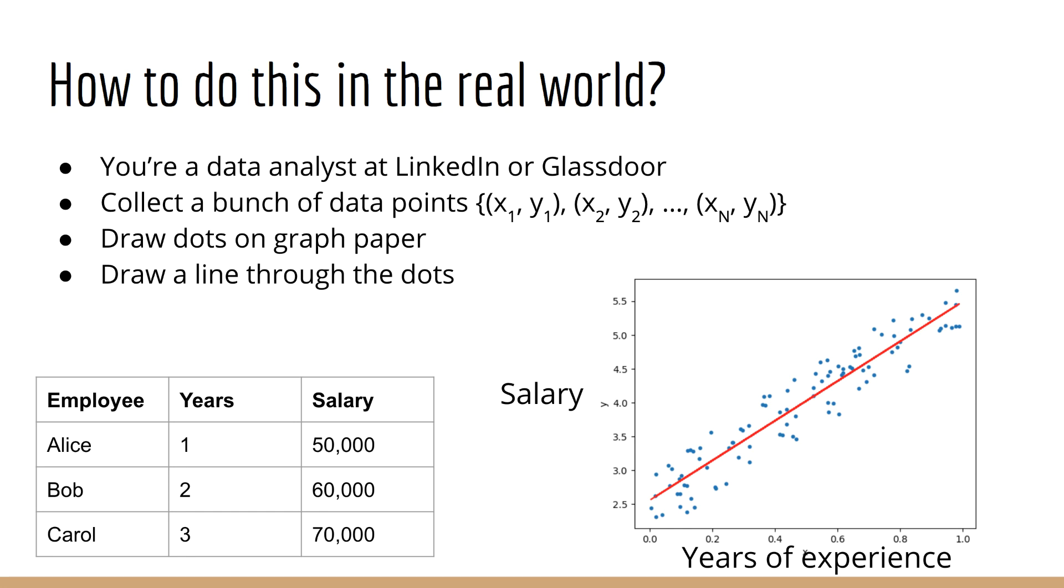To expand on this a little bit, here's how you would do this in the quote-unquote real world. Let's say, for example, you are a data scientist at LinkedIn or Glassdoor. So, you have access to their database, and you can see, for each user, how many years of experience they have, and what their current salary is. Let's call these data points x1 up to xn, and y1 up to yn. As mentioned previously, x is the years of experience, and y represents the salary. We use y to represent the true salary, whereas y hat represents the predicted salary. Both x and y are indexed by the numbers 1 to n, so there are n people in our database. Then, what you're going to do is you're going to take a big piece of graph paper and plot each of these xy data points. You're physically going to draw a dot for each data point. Then, once you're finished drawing all your dots, you're going to take a line that goes through all these data points. Pretty simple, I think. And believe it or not, this is exactly what machine learning is.